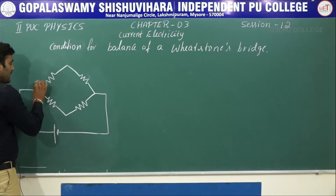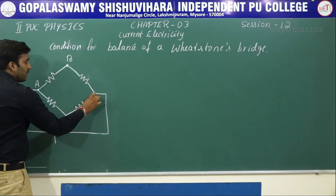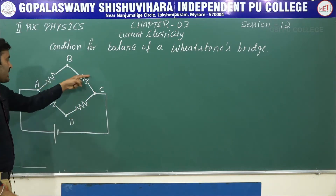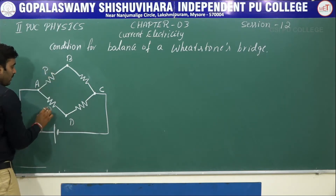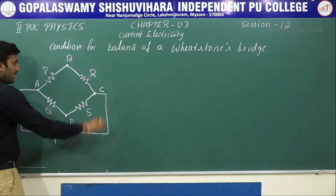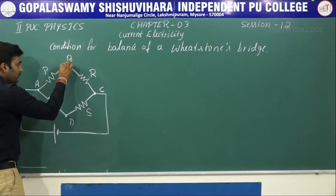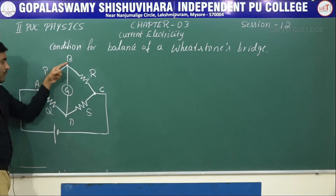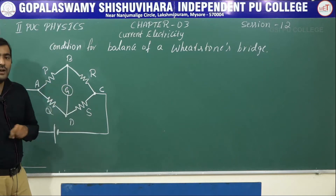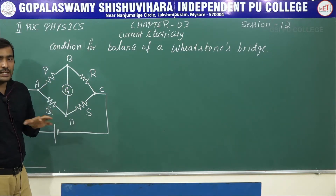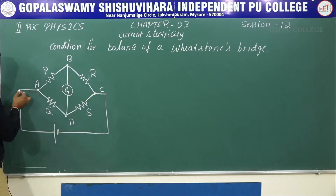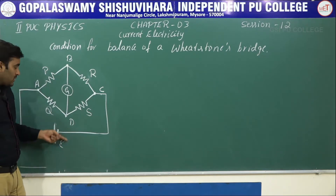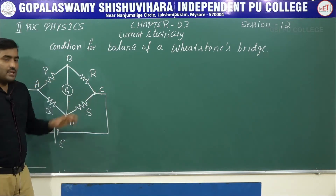I will call this quadrilateral as A, B, C and D. The four resistors are marked as P, Q, R and S. Along the diagonal BD, connect a galvanometer — a device which detects current. Between A and C, we are connecting a voltage source having an EMF of E along AC externally. This is the arrangement of Wheatstone's bridge.